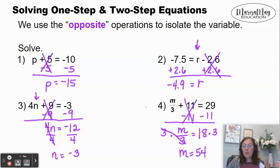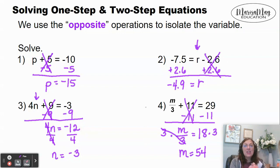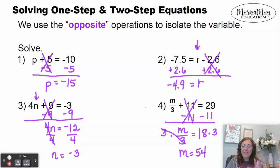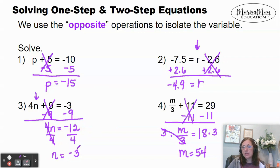So really, I want you to see it's all about looking and asking yourself what's happening to the variable, and then going and doing the opposite of that to both sides of the equation. All of our work from here on out in the lesson are going to come back to a two-step equation, and a two-step equation is going to come back to a one-step equation. So you have the basics here. Let's do a couple more multi-step problems where we have a little bit of simplifying to do first.